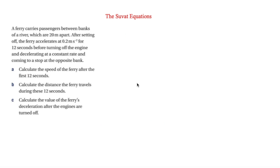Now it's time to look at some questions involving SUVAT equations. The first one says a ferry carries passengers between banks of a river which are 20 metres apart. After setting off, the ferry accelerates at 0.2 metres per second squared for 12 seconds before turning off the engine and decelerating at a constant rate, coming to a stop at the opposite bank. Part A asks us to calculate the speed of the ferry after the first 12 seconds.